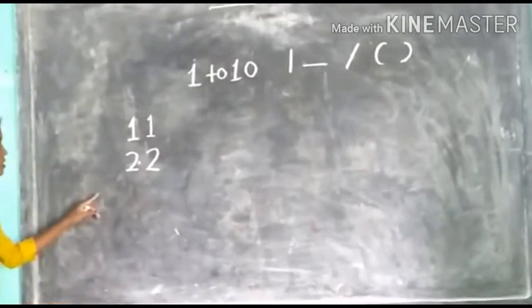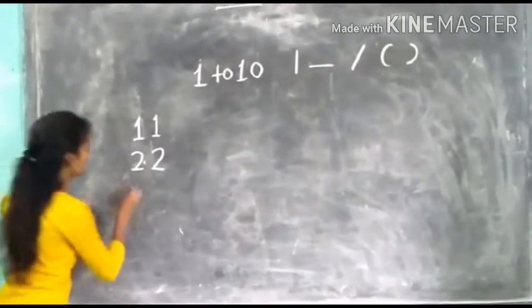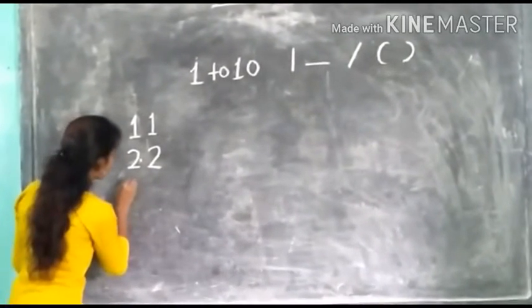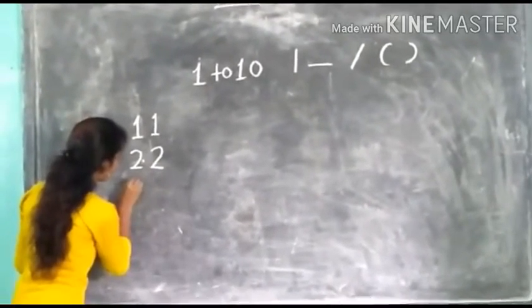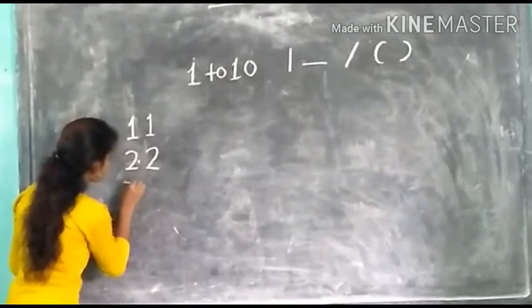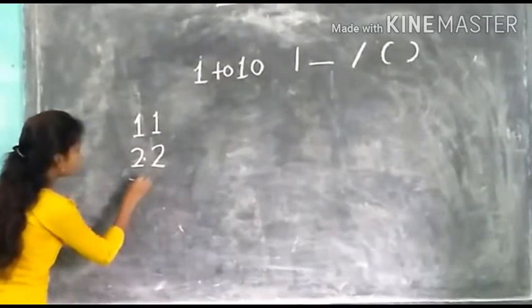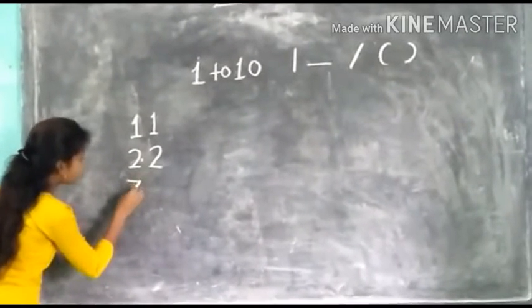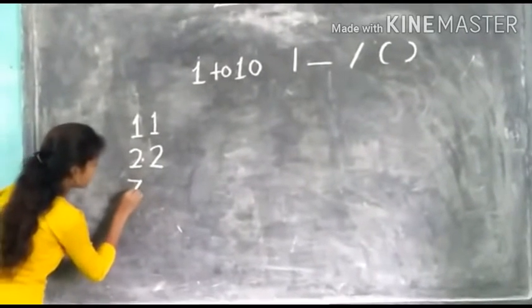Next number is 3. Sleeping line, slanting line, slanting line, and curved. This is number 3.